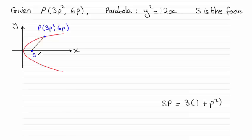Now we need to get the coordinates of the focus S in order to start to work out the distance SP. And you should be familiar with the fact that the coordinates of S are a, 0.